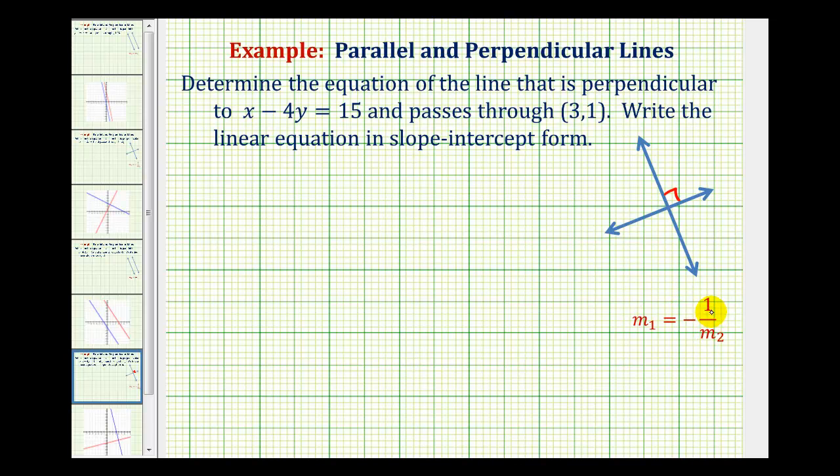Which can be a little confusing. So for example, if this first line has a slope of 2/3, then the line perpendicular to this line would have a slope of negative 3/2. So to determine a negative reciprocal, notice how we flip the fraction over and change the sign.